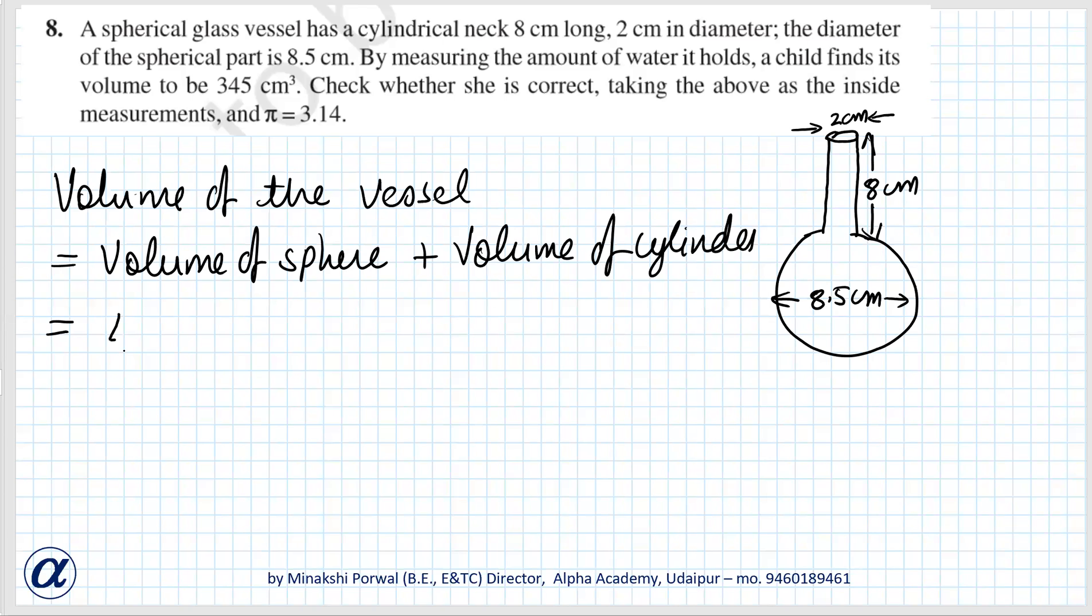Volume of sphere is 4/3 π r³. The radius is 8.5/2 because that is the diameter. Volume of cylinder is π r² h. Radius is 2 cm, radius is 2/2, that is 1 cm, π r², and h is 8. So this we have to solve.